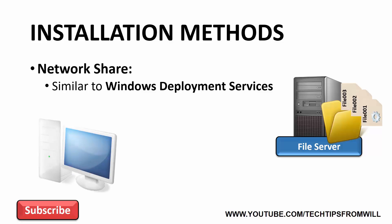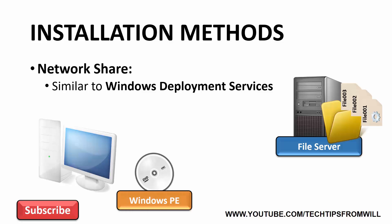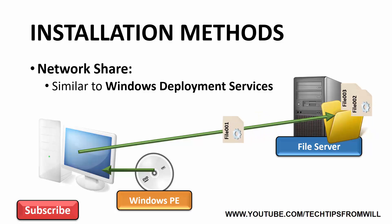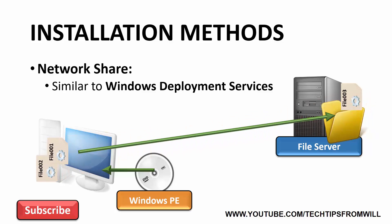Elsewhere on the network, all the administrator has to do is boot the destination computer from a Windows PE boot disk. Once booted into Windows PE, the administrator is able to connect to the shared folder on the file server and access the Windows 10 installation files. The only real difference with a Network Share is that instead of connecting to a WDS server to download the operating system, you connect to a Network Share instead.